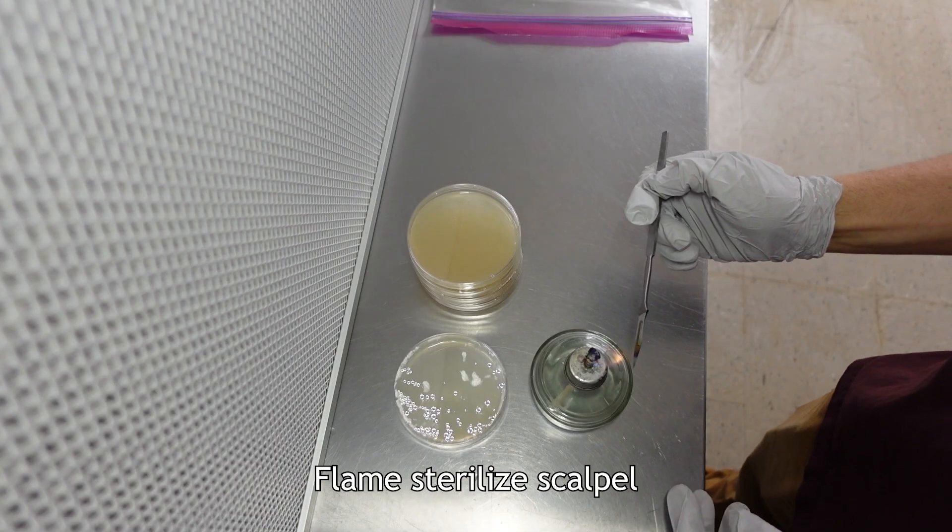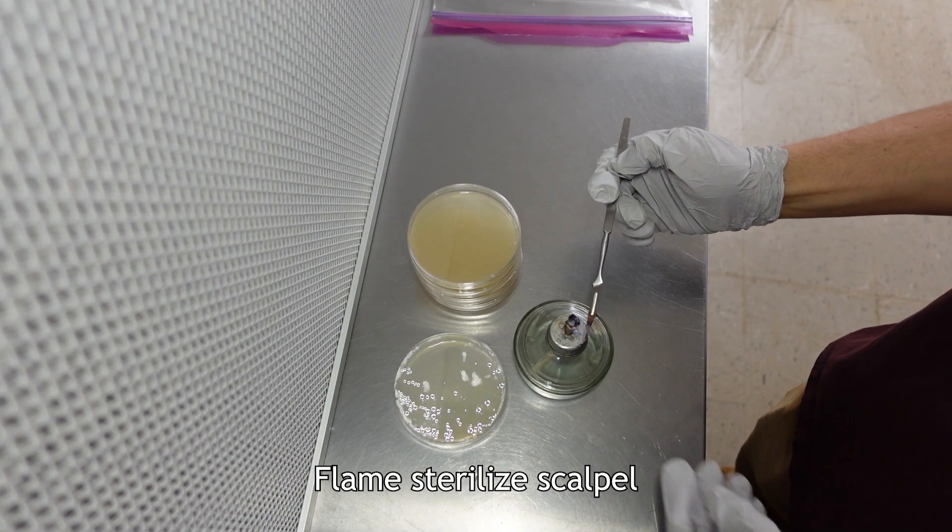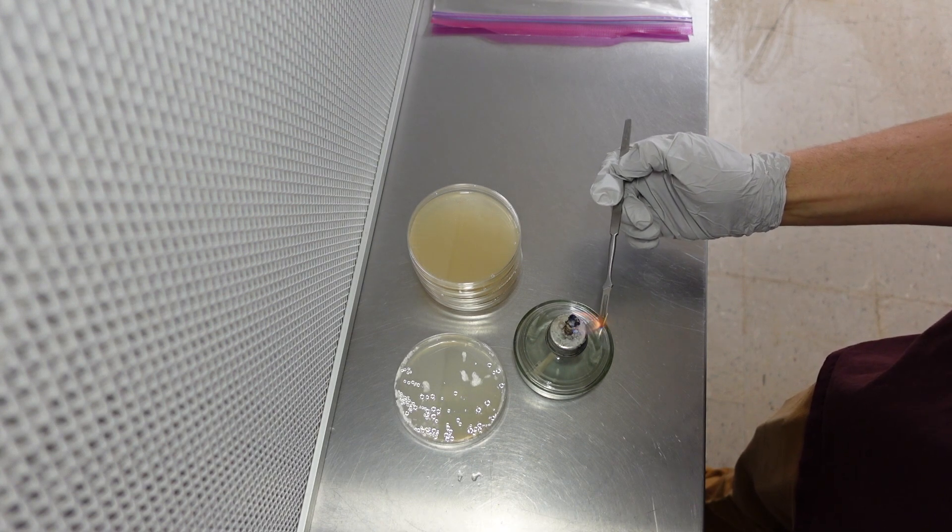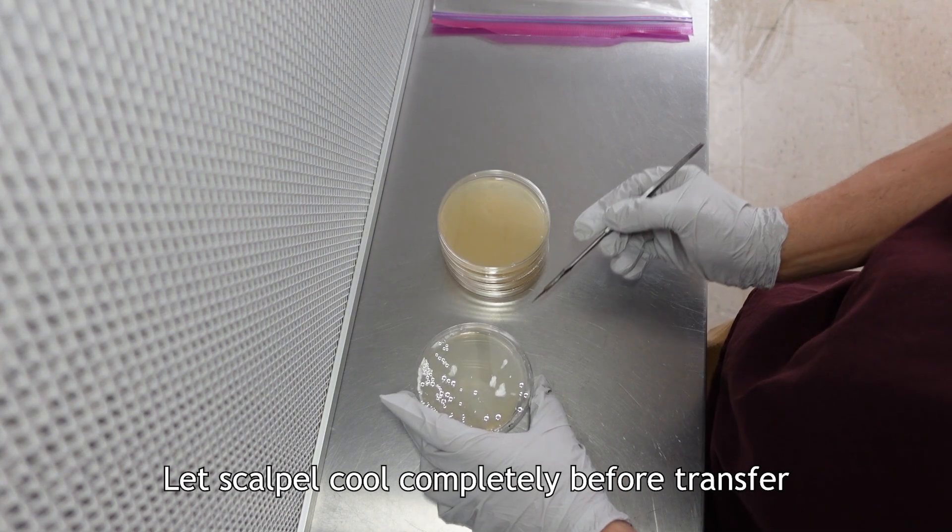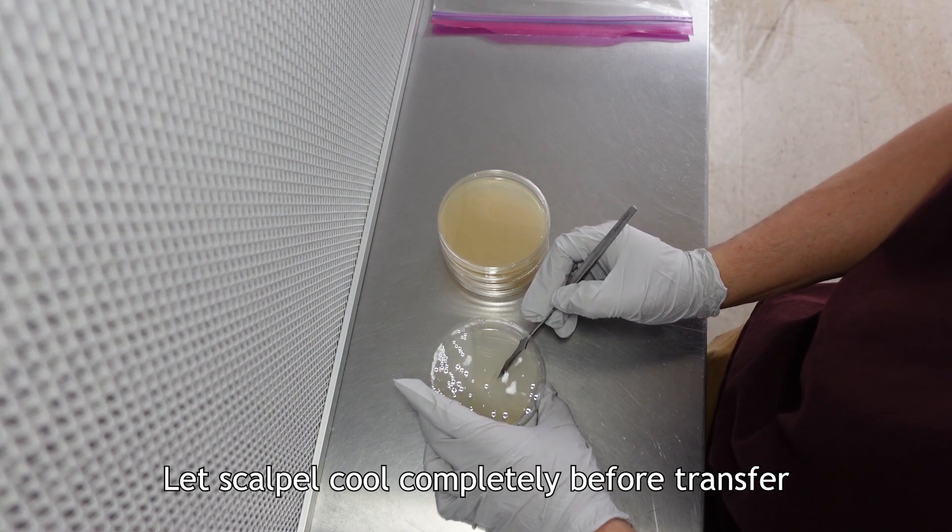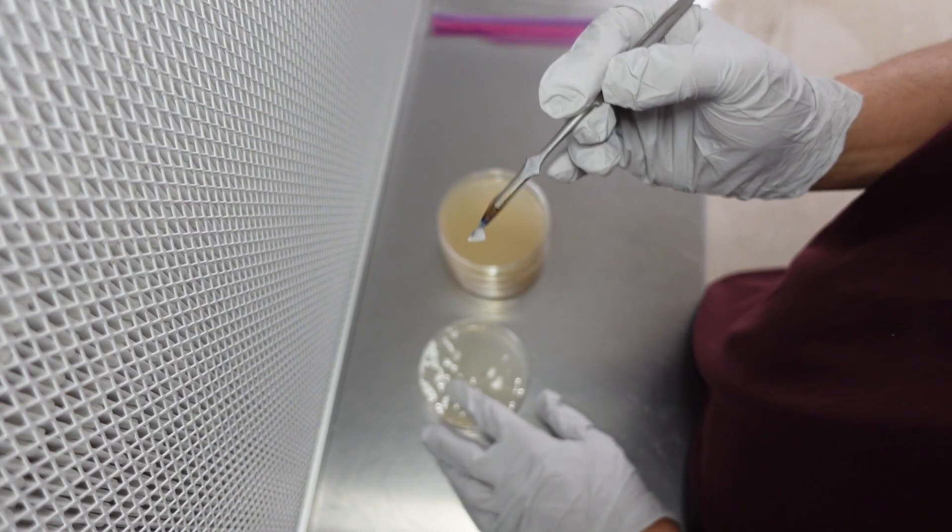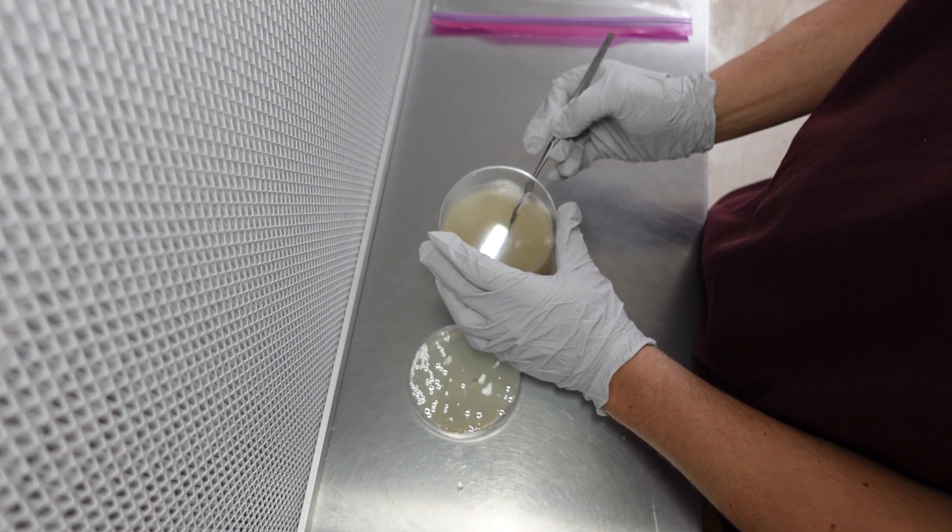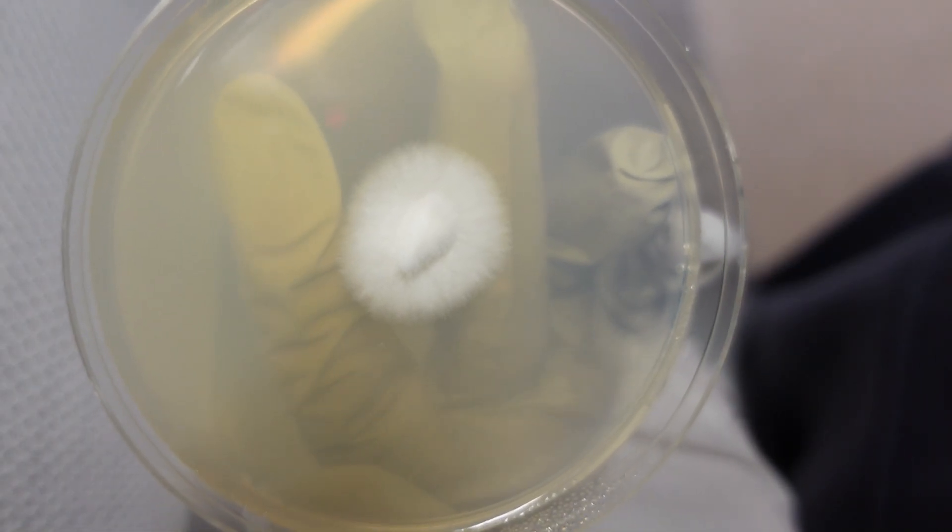To isolate and clean up the culture, flame sterilize your scalpel and cut a small piece of mycelium from the leading edge furthest away from the contaminant. Try to open the top of the plate as little as possible, just enough to fit the scalpel in. Then, quickly transfer the sample to a clean plate and seal it. Discard the contaminated plate and continue monitoring the fresh plate to ensure it is not contaminated.